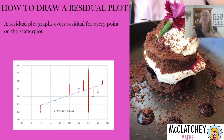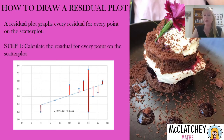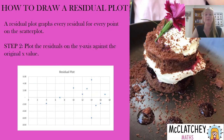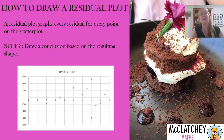Now we're going to create a residual plot graph. What this does is take that residual calculation for every single point on our scatter plot — so you'd hope there aren't too many, otherwise you're going to be repeating that calculation for every one of those points. Step one is to use your formula to calculate the residual. Step two is to plot those differences on your y-axis against your original x value — we can see some positive differences and some negative differences, some above and below the x-axis, while the x-axis simply represents those original values. Then we draw a conclusion.